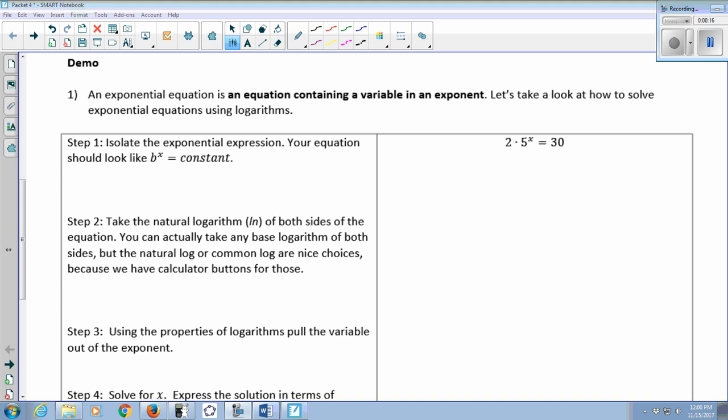Step one is to isolate the exponential expression. You want your equation to look like b to the x equals a constant, a number to the x equals another number. In step one here I'm going to divide both sides by 2, because the order of operations says that I would have to raise that 5 to the x before I can multiply by 2. So 2 times 5 to the x does not equal 10 to the x. You can't do the multiplication first. Instead we divide both sides by 2 so that we get 5 to the x equals 15.